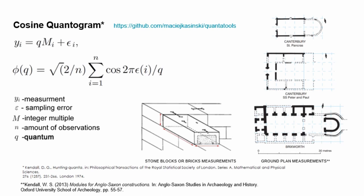The cosine quantogram algorithm was applied by my colleague, and I can share the address for anyone who wants to check their own data. Essentially, in the context of medieval town planning, each parcel dimension can be described as an integer m multiplied by a basic unit q, plus some error. The value of q which maximizes the formula within a given range is the one with the highest probability of being the true quantum.